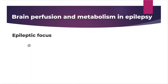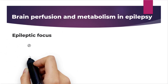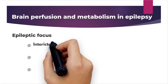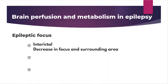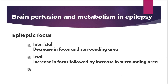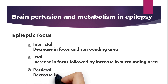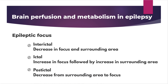Brain perfusion and metabolism in the epileptic focus will be described. In the interictal phase, brain perfusion and metabolism are decreased in and around the epileptic focus. During seizures, brain perfusion and metabolism increase in the epileptic focus, followed by an increase in the surrounding area. After the seizure, brain perfusion and metabolism decrease from around the epileptic focus.